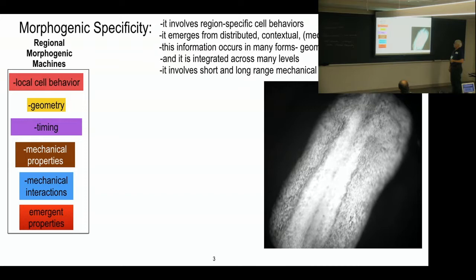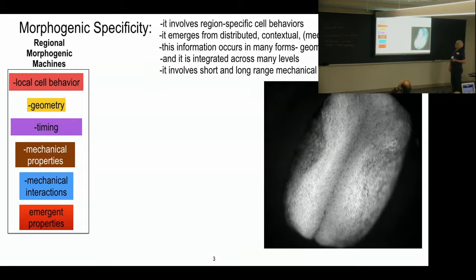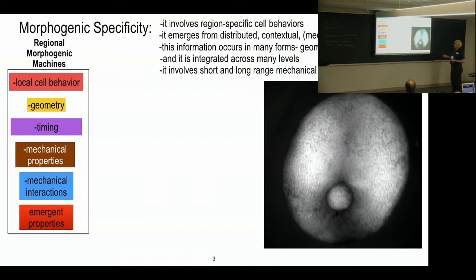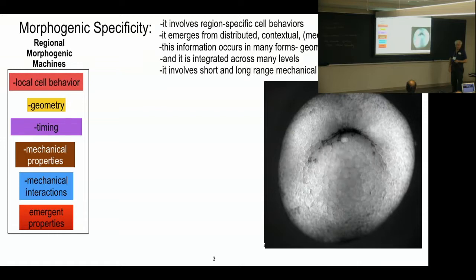There's always a local cell behavior and it's always got a geometry. The timing. The timing is critical. It's something that has to be done right. Both the start of an event and the progression of it. Where does it start from? Where does it spread to? Mechanical properties. What kind of force does it generate? Is it isotropic or anisotropic?